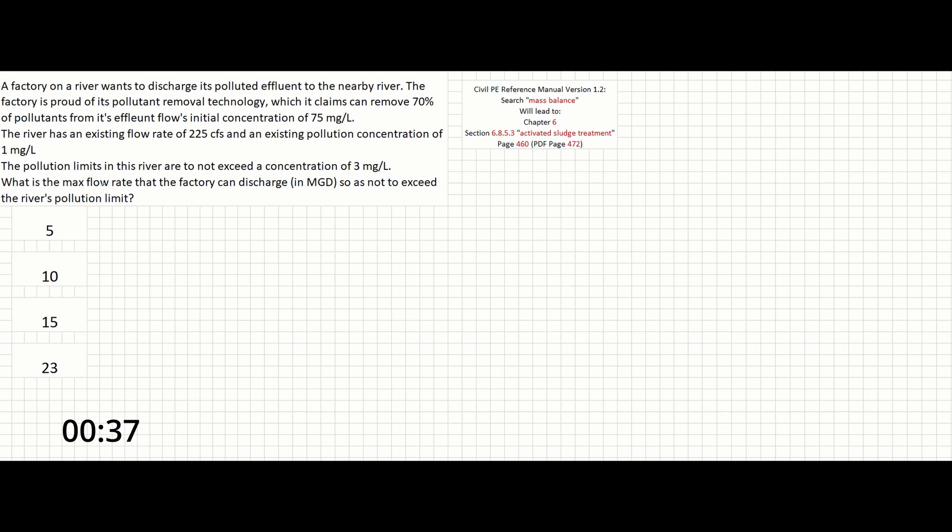What is the max flow rate that the factory can discharge in million gallons per day so as not to exceed the river's pollution limit?